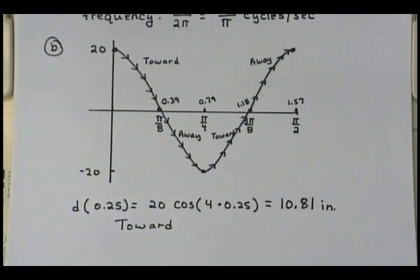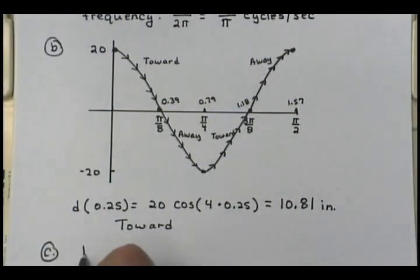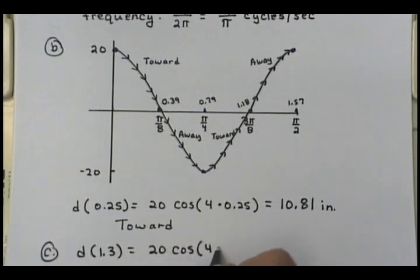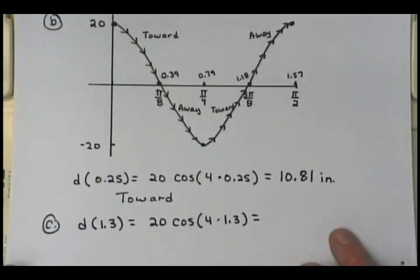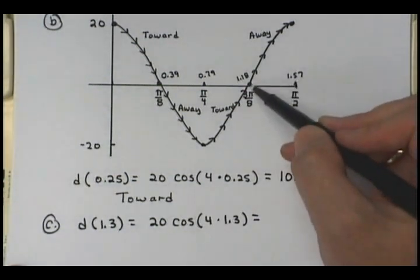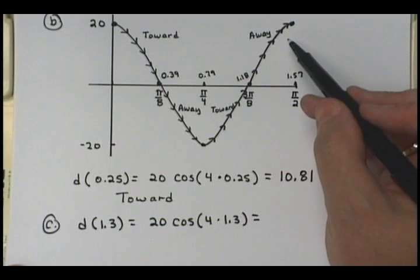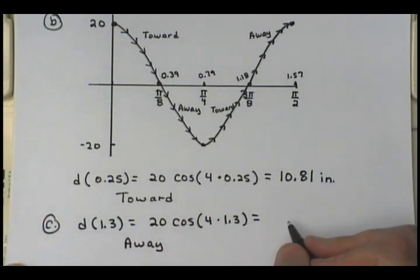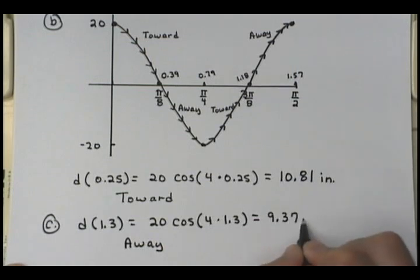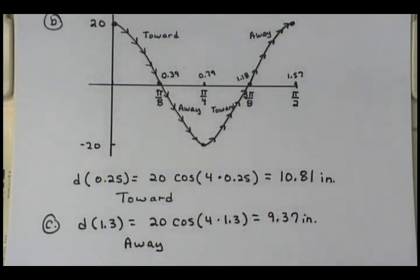For part C, at t equals 1.3 seconds — which falls in the interval where the graph is moving away from equilibrium — put 1.3 into the calculator and you get 9.37 inches. So at t equals 1.3, the displacement is 9.37 inches and the bob is moving away from equilibrium.